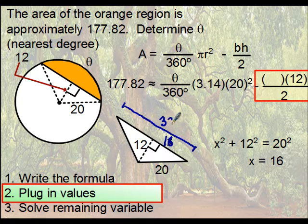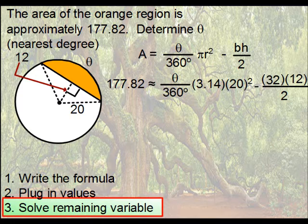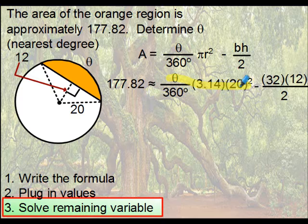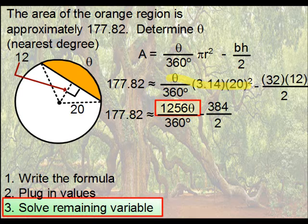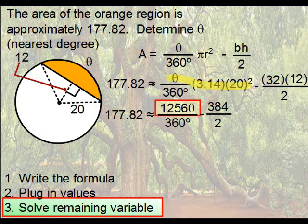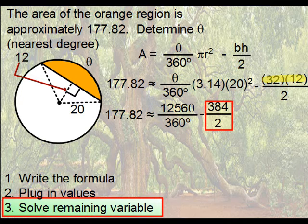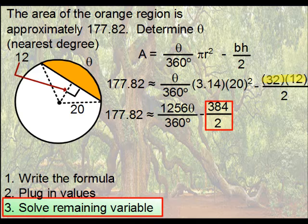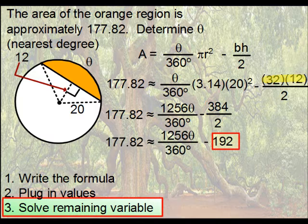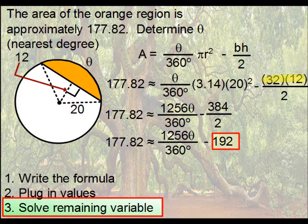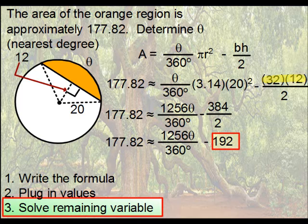So that's what we write in right here. So now let's clean this up a bit. Let's rewrite this. Remember, we're multiplying here 3.14 times 20 squared, and we get 1256 theta, and that's over 360 degrees. 384 is what you get when you multiply 32 times 12, which in turn gives you 192.